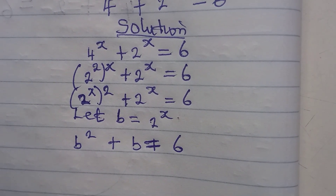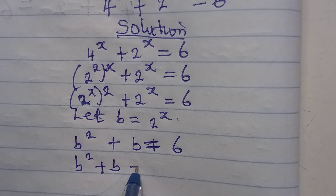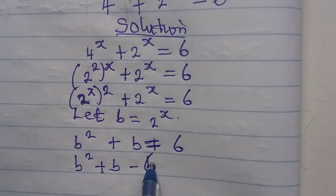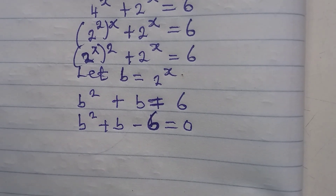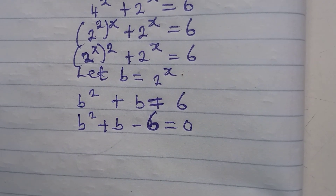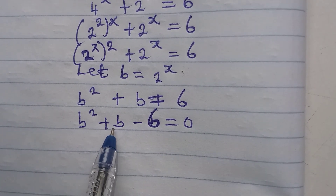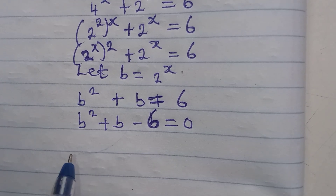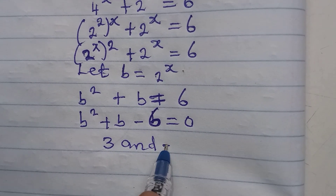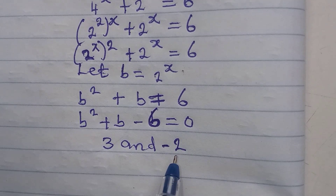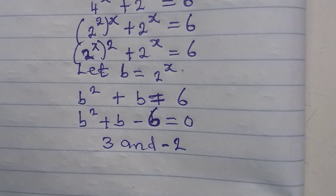Now we have a quadratic equation. Bringing everything to the left gives b squared plus b minus 6 equals 0. We ask: what two numbers multiply to give minus 6 and add to give 1, the coefficient of b? The answer is 3 and minus 2, because 3 times minus 2 is minus 6, and 3 minus 2 is 1.